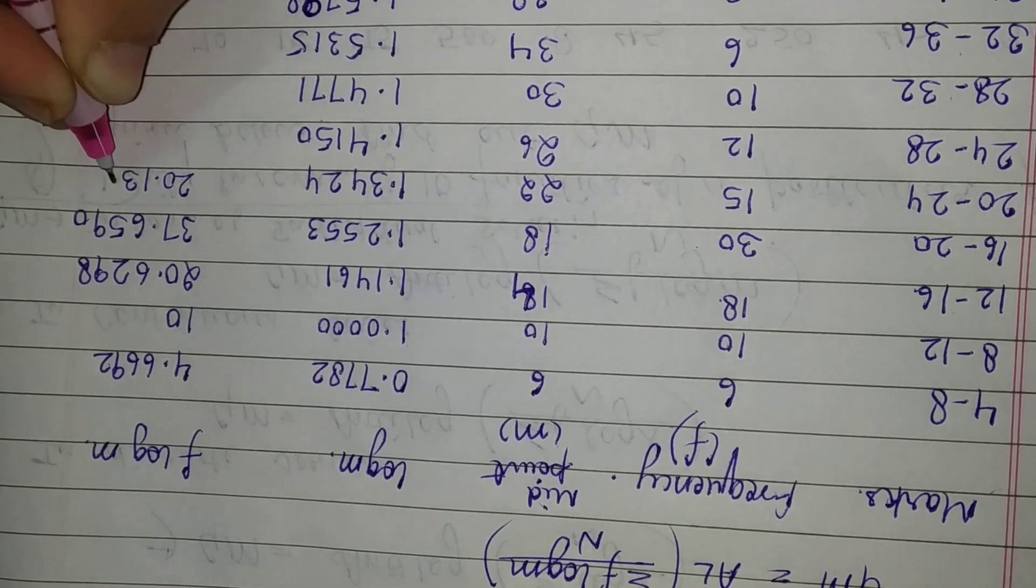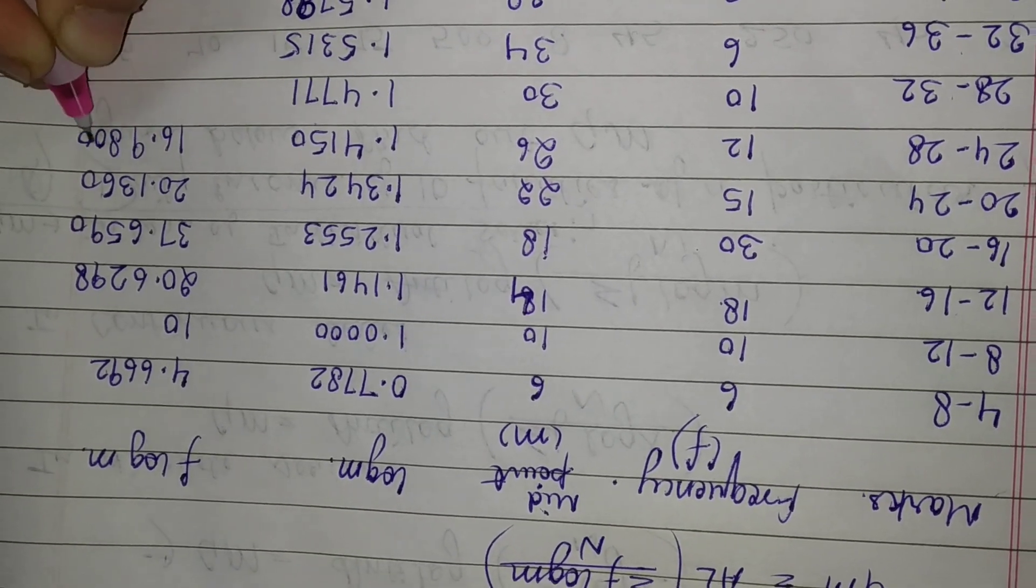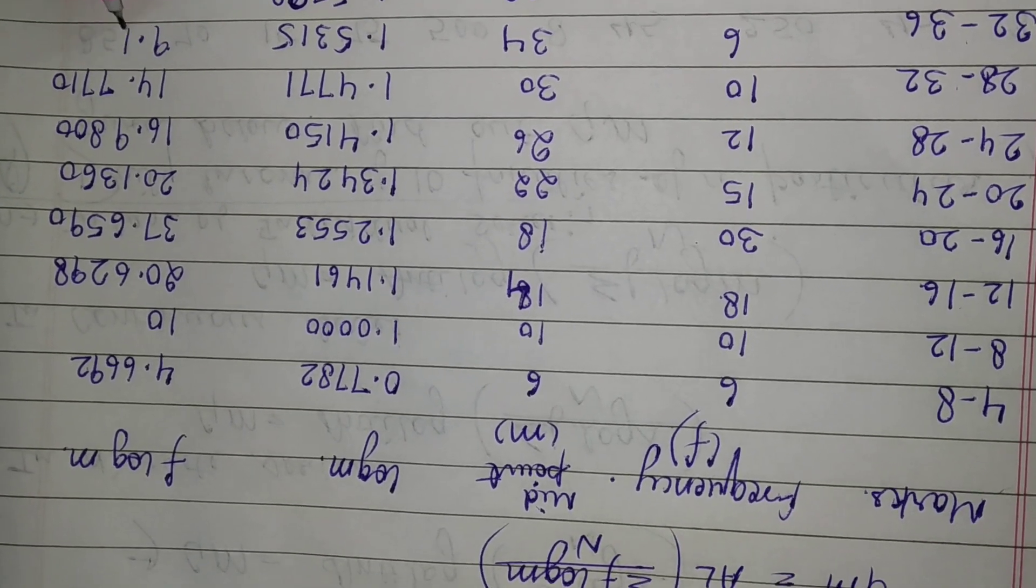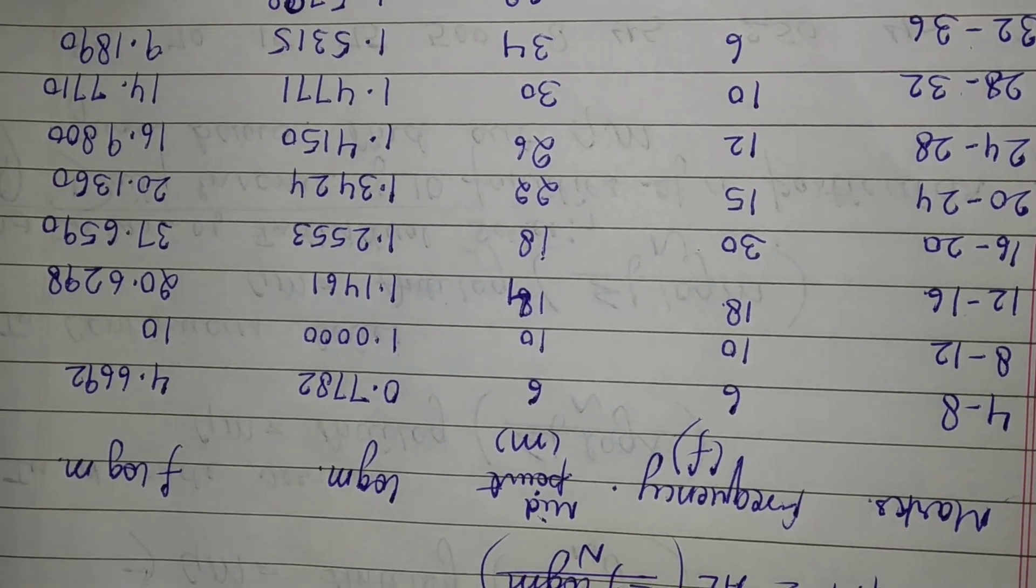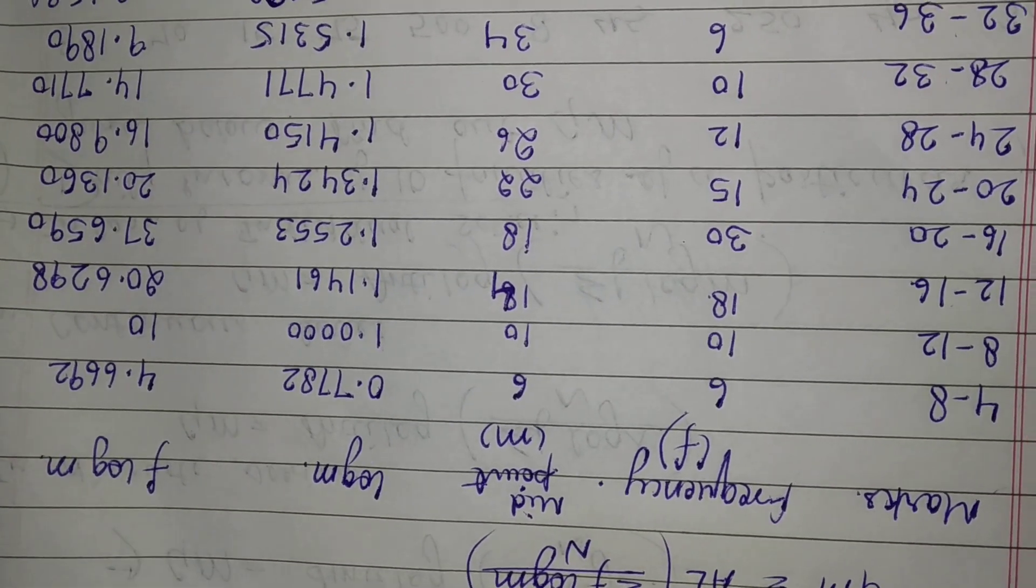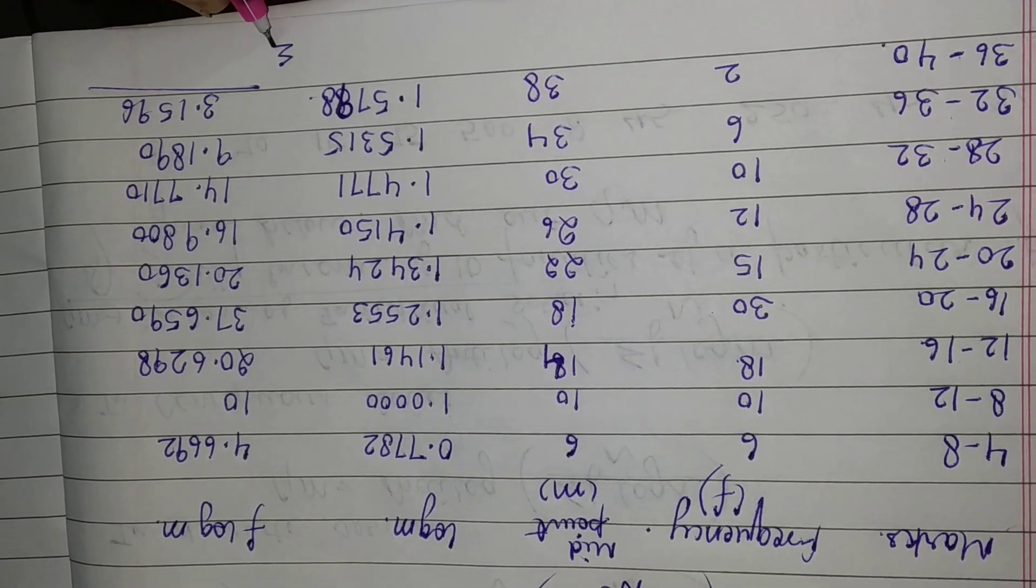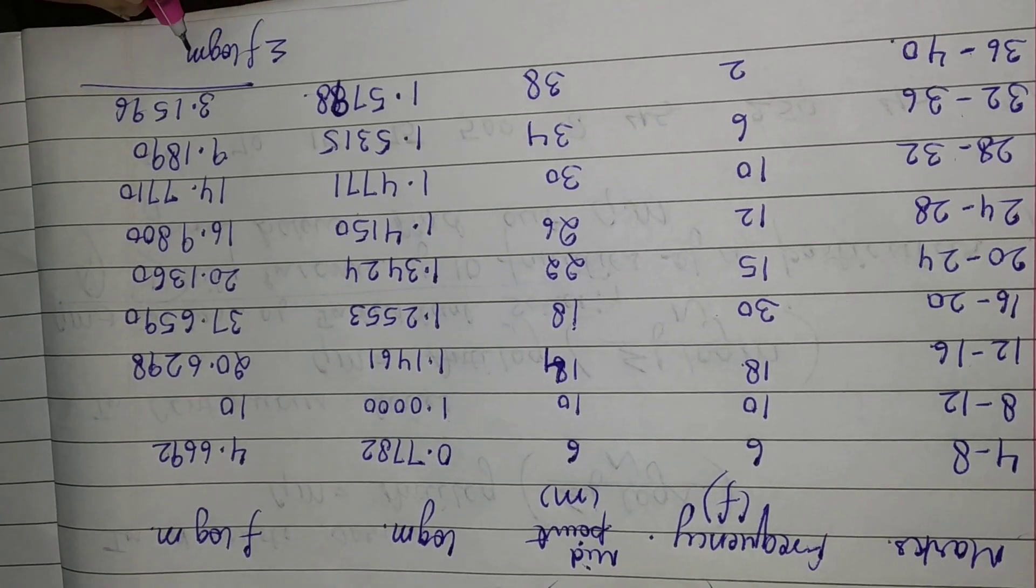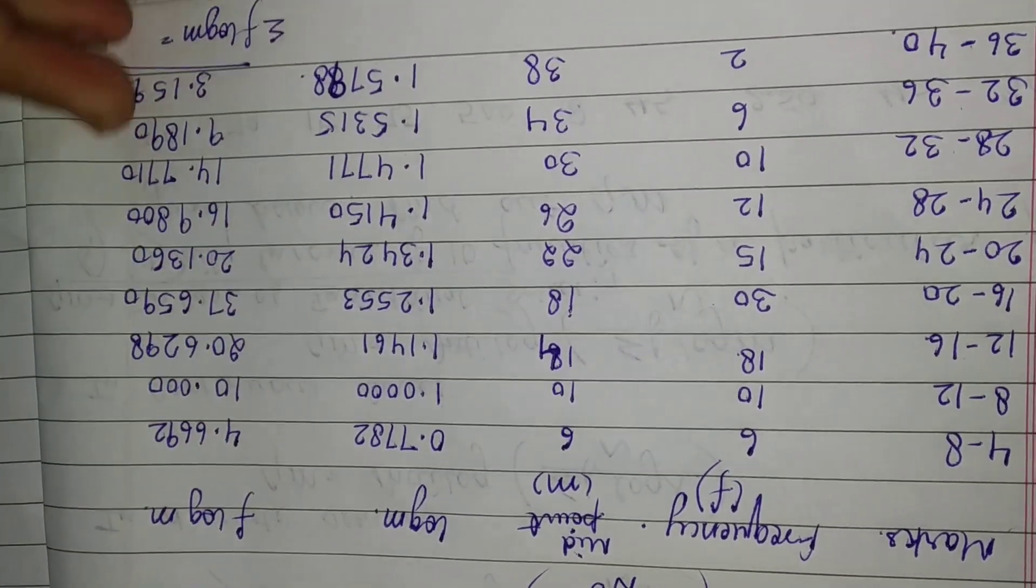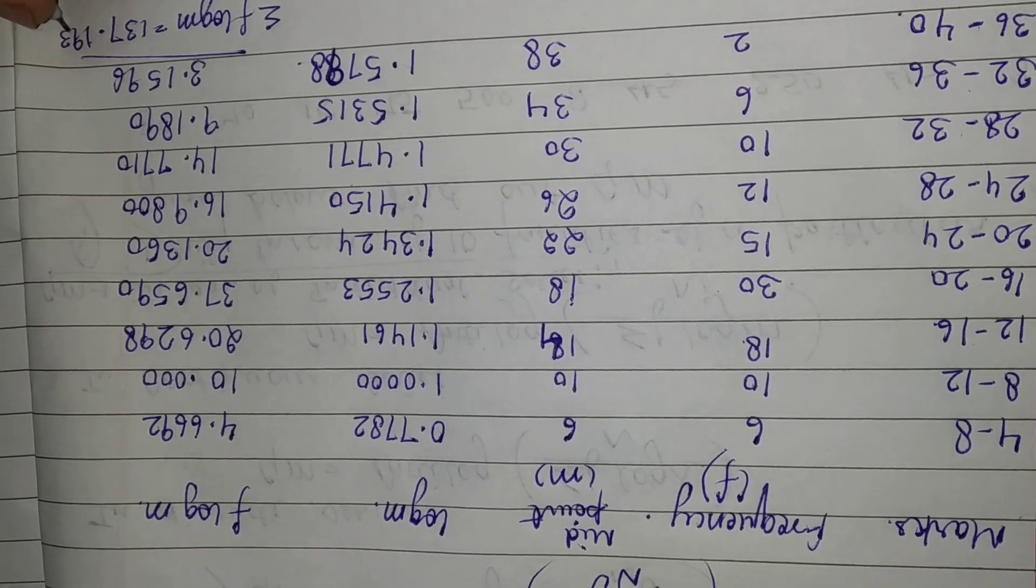Then I will obtain the summation of f log m. I will do the sum of all these values and I will get 137.1936.